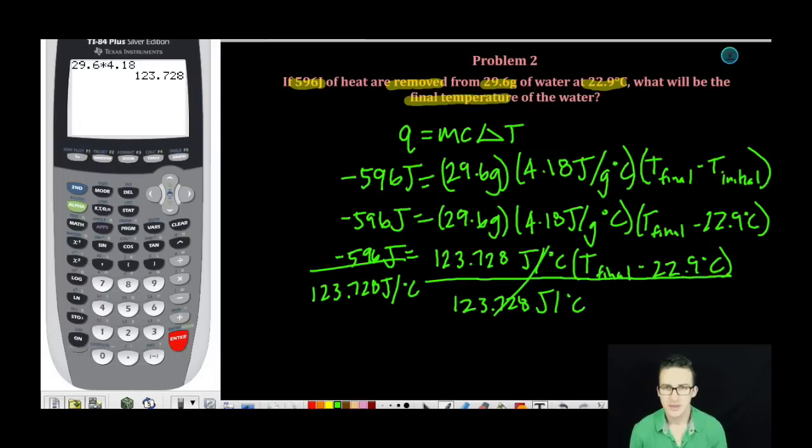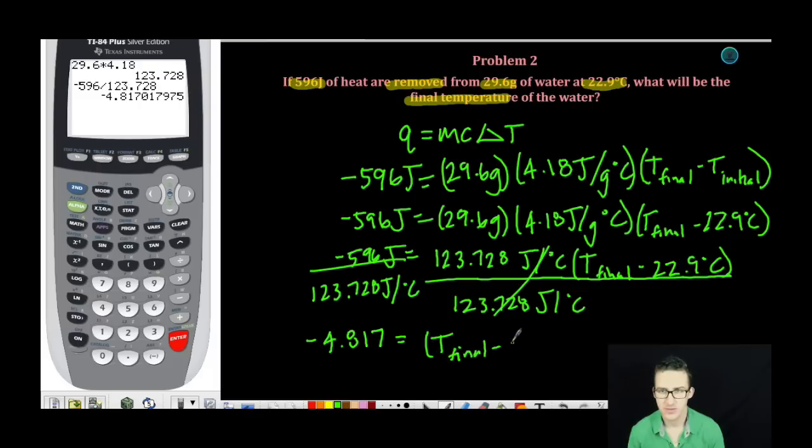I'm going to divide each side by the 123.728 joules per degree Celsius. Boom. Cancel out. Going to take a quick jump over to my calculator to get negative 4.817 equals T final minus 22.9 degrees Celsius.